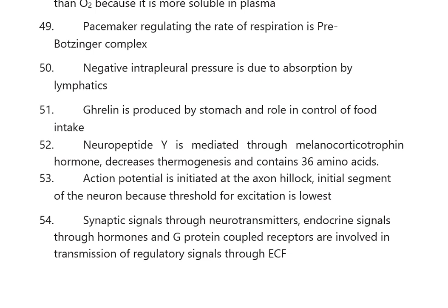Action potential is initiated at the axon hillock, the initial segment of the neuron, because the threshold for excitation is lowest there. Synaptic signals are transmitted through neurotransmitters, endocrine signals through hormones, and G protein-coupled receptors are involved in transmission of regulatory signals through ECF.